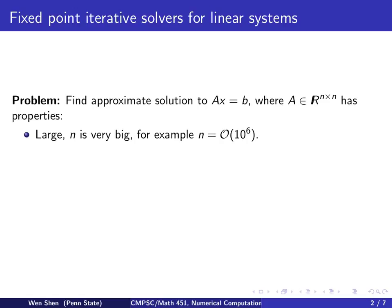First, it's a large system, meaning N is very big. You can say N equals to 1 million, for example. And also, A matrix has a small percentage of non-zero elements. So most of the elements in A are zero, and this is called a sparse matrix.